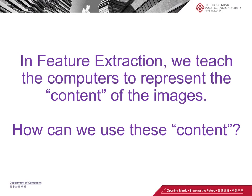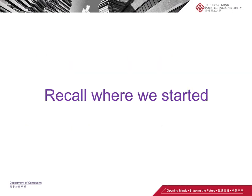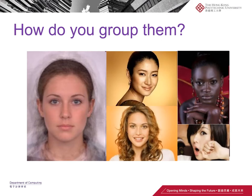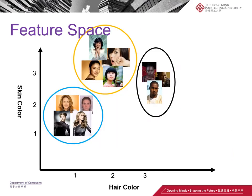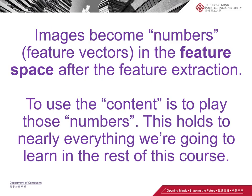In lecture 4, we actually introduced how the computer can use feature extraction to convert images into vectors to represent the content inside that image. But how can we use this content? Let's recall where we started. We've been given a set of images and asked to group them. We figured out a way by representing the images into the feature space, in which each image is a feature vector. So we can just group them by drawing circles like this.